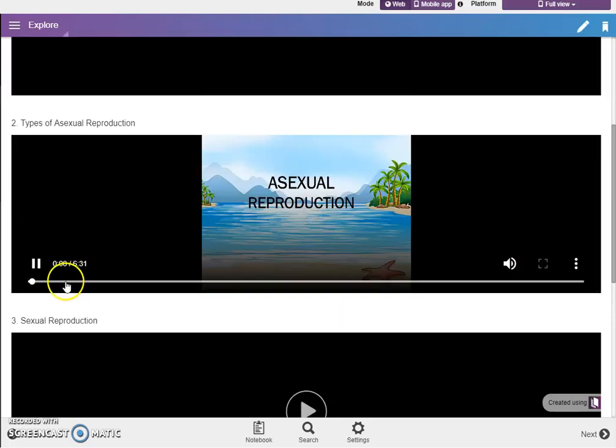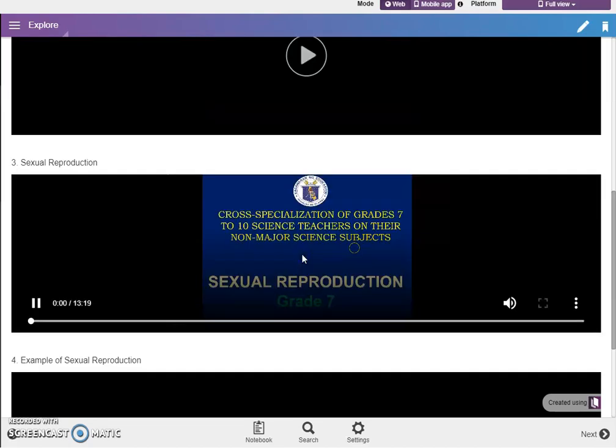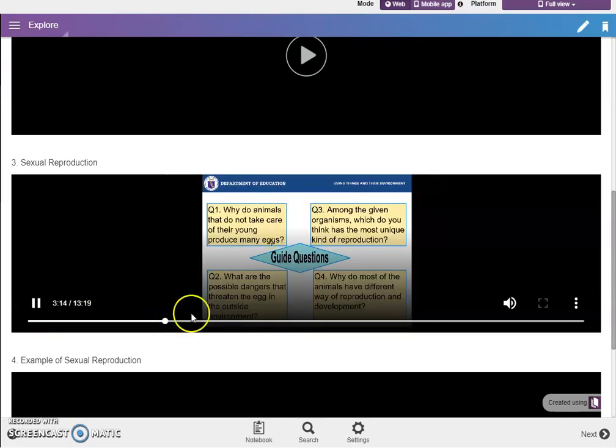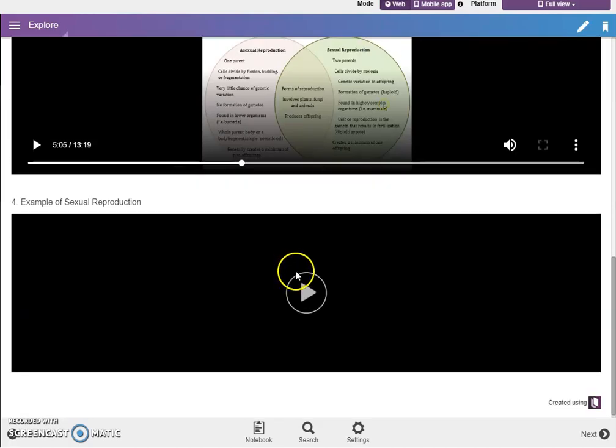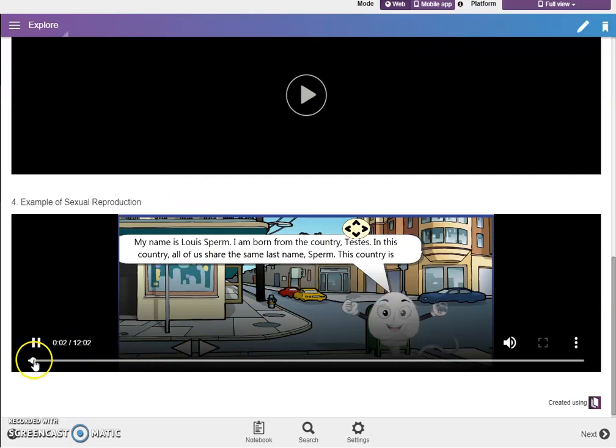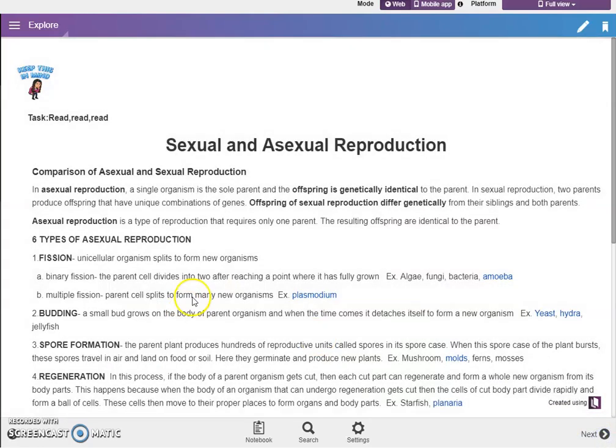Then for the types of asexual reproduction. And for sexual reproduction. So this is very informative already. And the fourth video. This was presented yesterday. So this is an example of sexual reproduction wherein it involves sperm cells and egg cells.